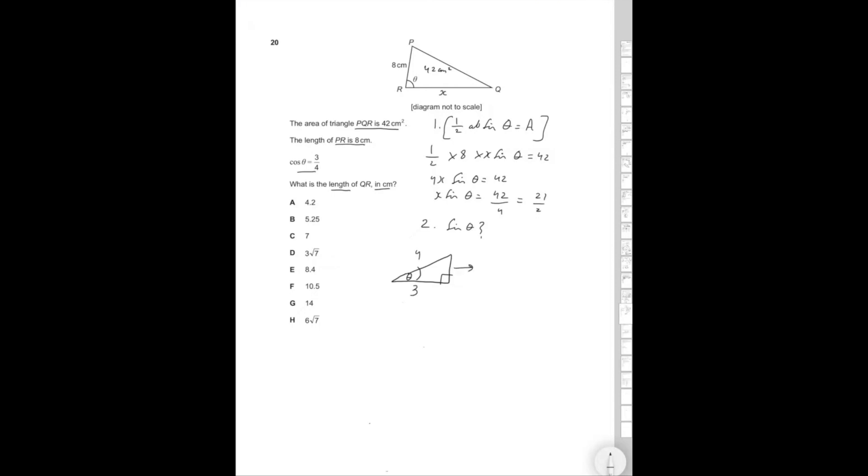Therefore this side, using Pythagoras, is going to be the square root of 4 squared minus 3 squared, which is the square root of 16 minus 9, which is root 7. So sine of theta is equal to opposite over hypotenuse, remember Soh. So root 7 over 4.